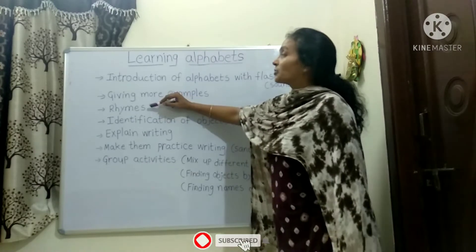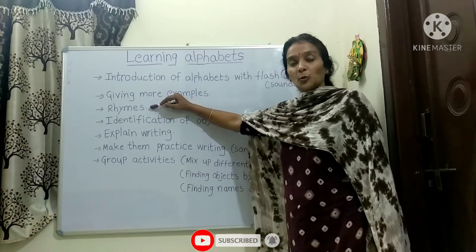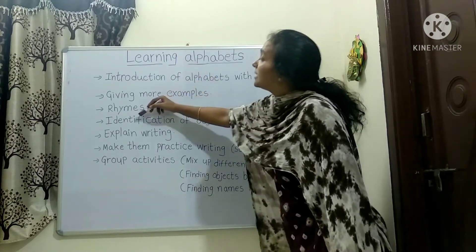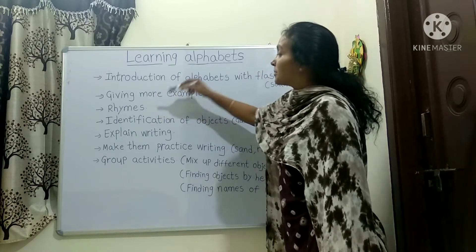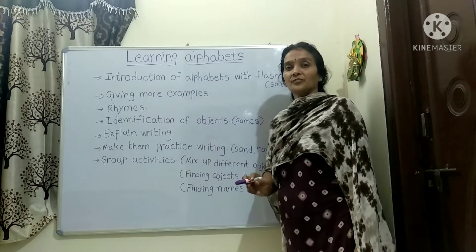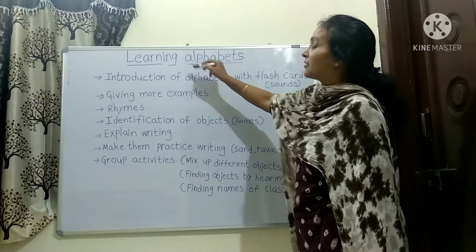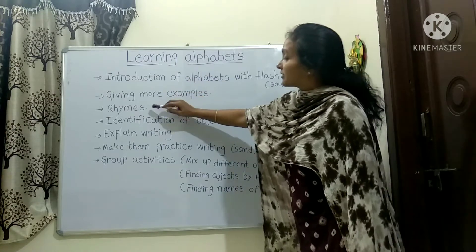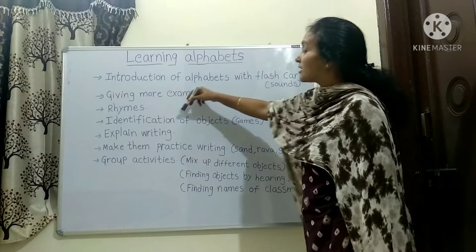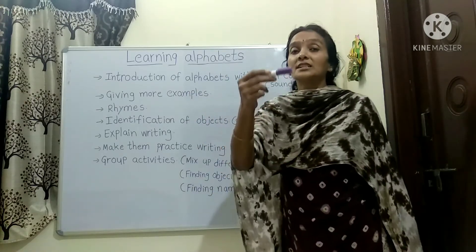After that, according to the letter and the sound, we introduce some rhymes also. And then the next step is identification of objects. After introduction, giving more examples, and after that rhymes, we ask the child to identify the objects through that sound.